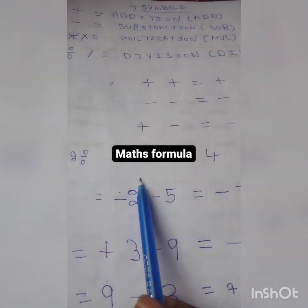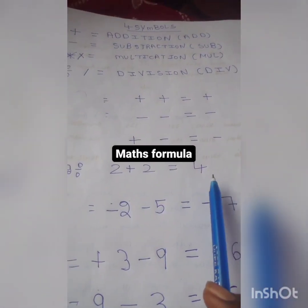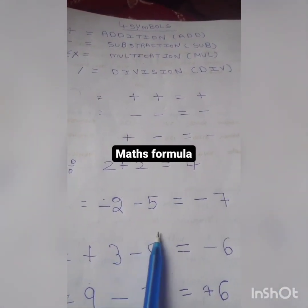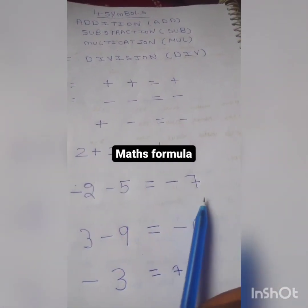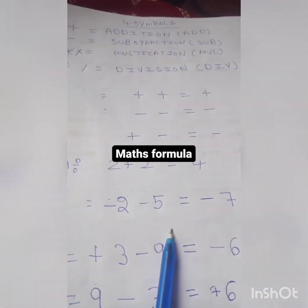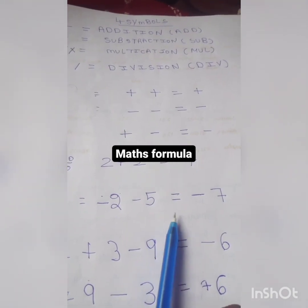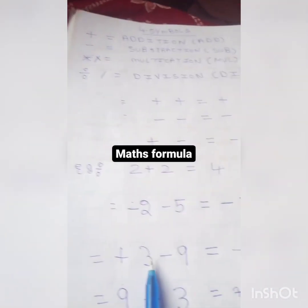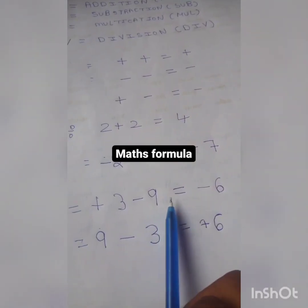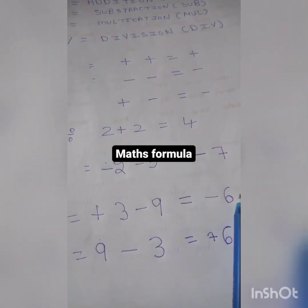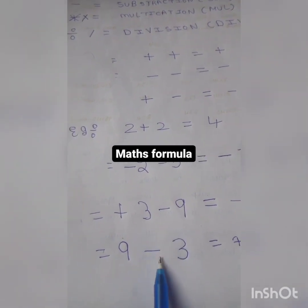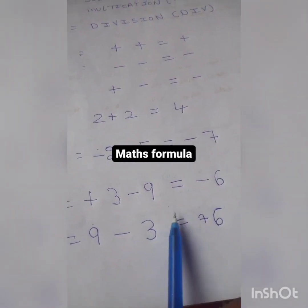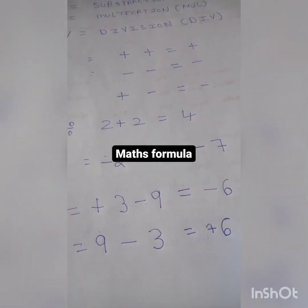2 plus 2 is equal to 4. Minus 2, minus 5, minus 7. Here we have 5 number of times, minus 7. Press 3 into minus 9 is equal to minus 6. 9 minus 3, press 6.